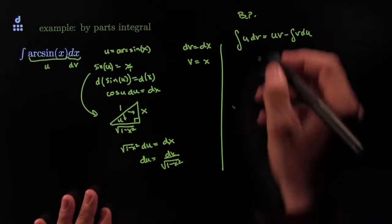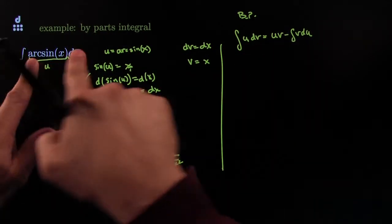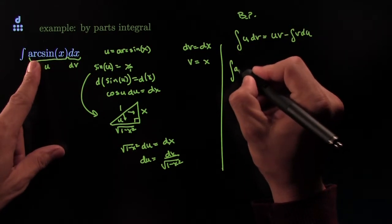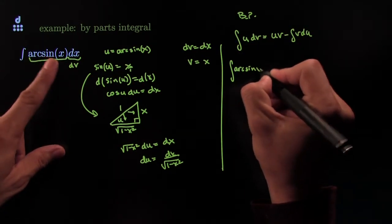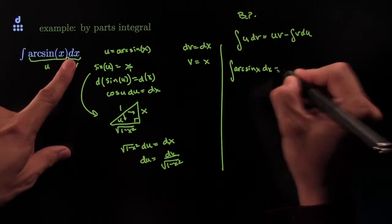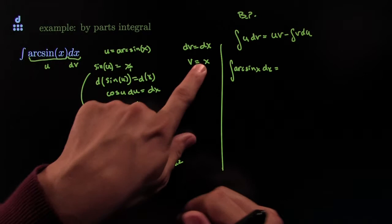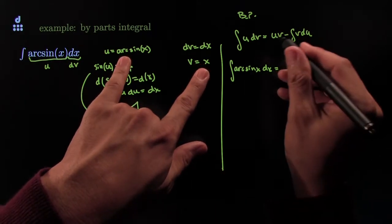We proved that in a different video. This means that this integral, substituting back everything in here, the integral of arcsine of x dx is equal to u times v. My u is here, and my v is here. u times v, that's u times v.